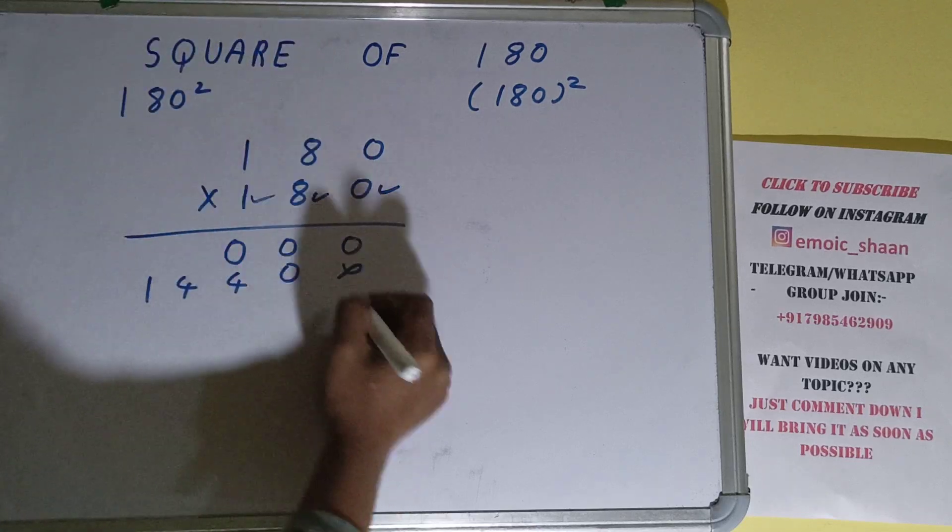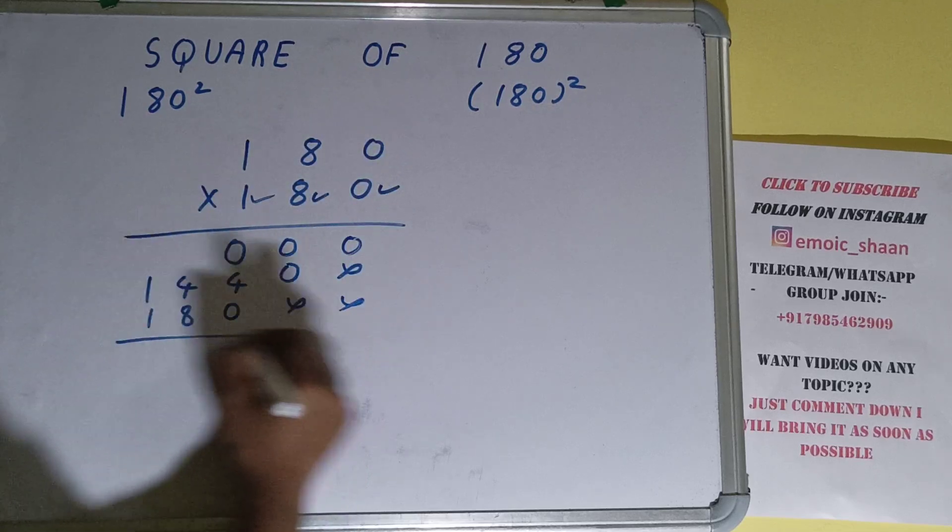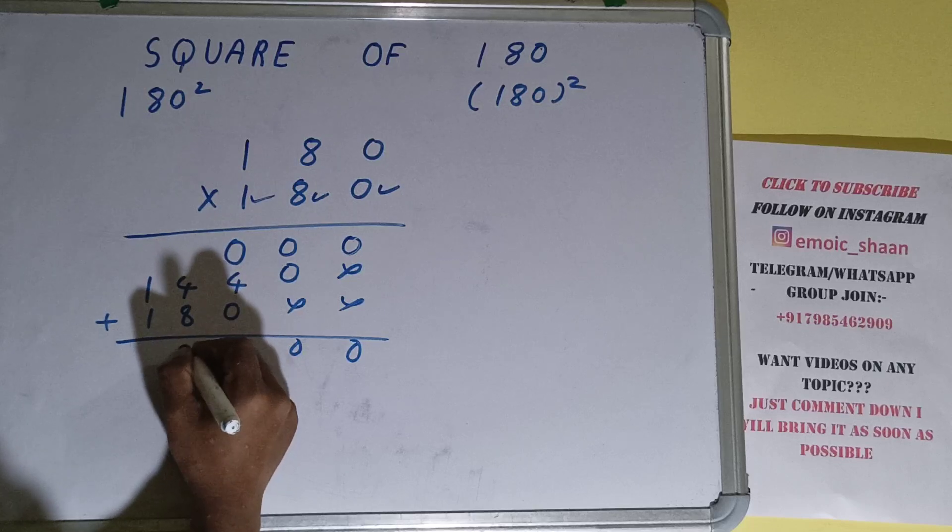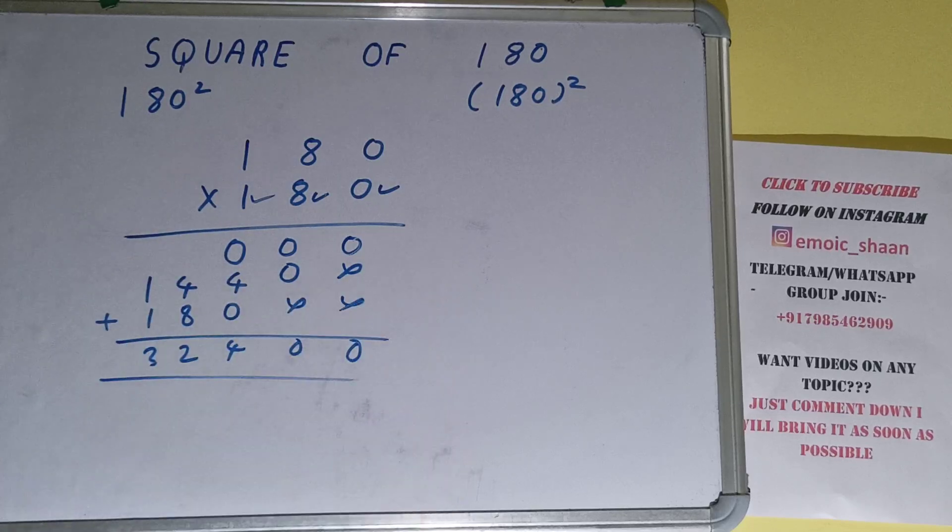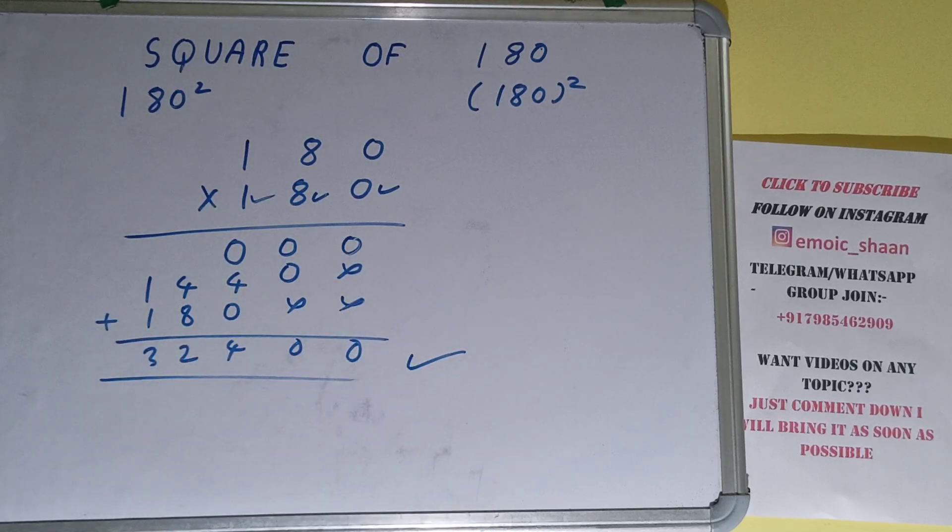Now this 1. 1 times 0 is 0, 1 times 8 is 8, 1 times 1 is 1. Just add them: 0, 0, 4, 2, 3. The answer will be thirty two thousand four hundred. That will be the square for the number 180. So this is all.